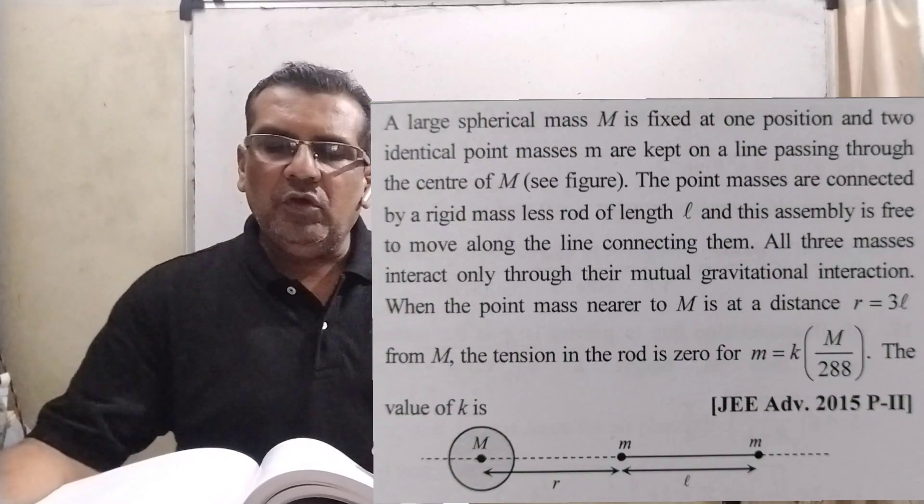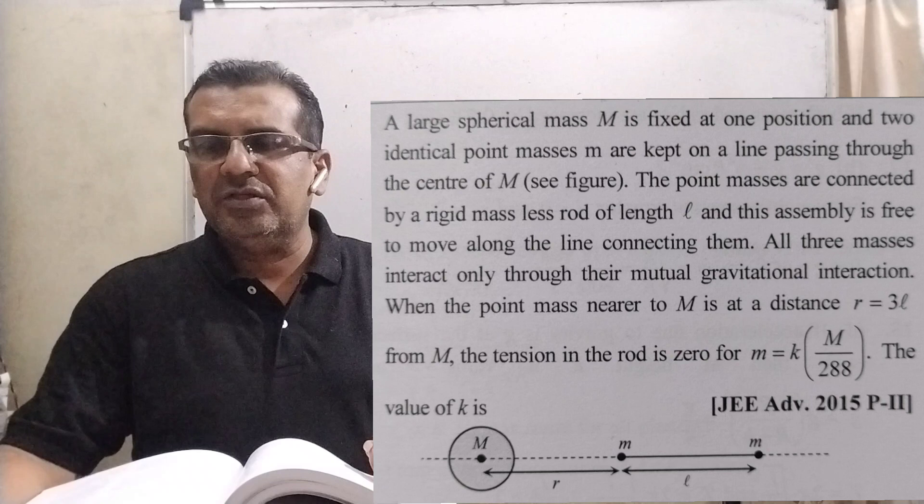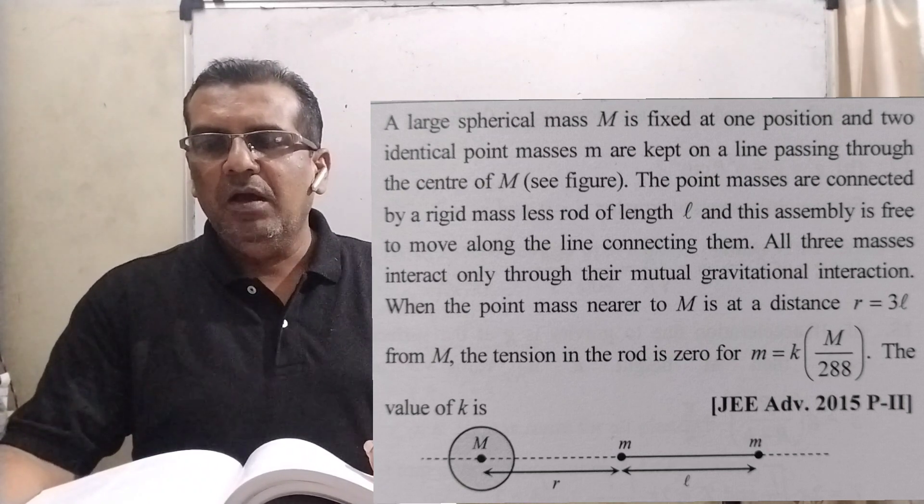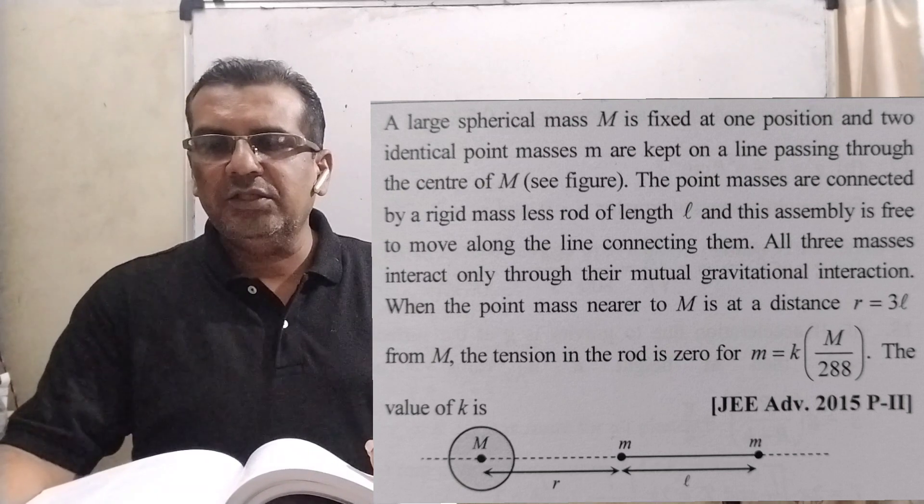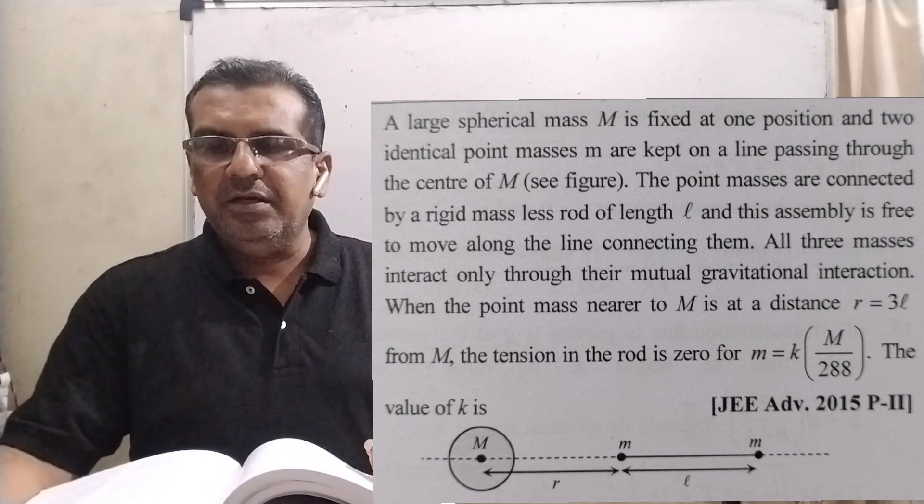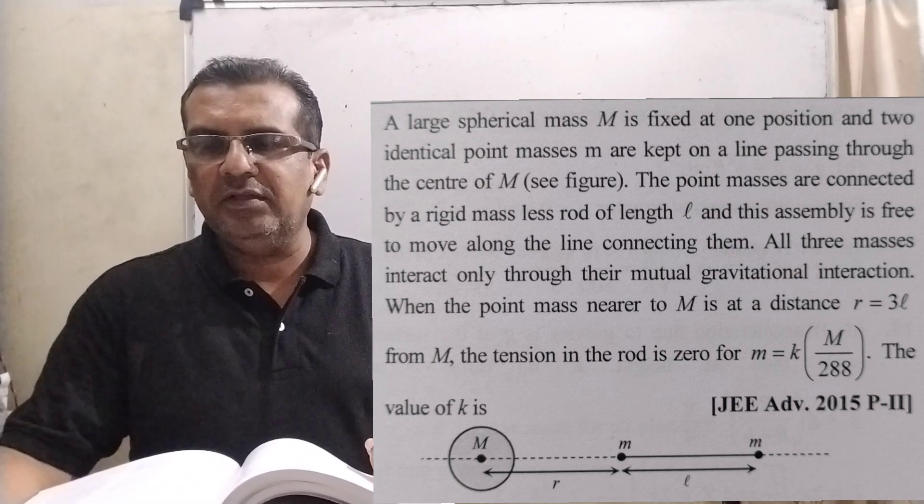Here, what is the question? A large spherical mass capital M is fixed at one position, and two identical point masses small m are kept on a line passing through the center of capital M. The point masses are connected by a rigid massless rod of length small l.